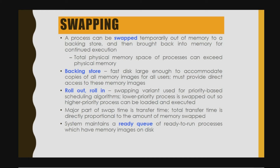Roll-out and roll-in is a swapping variant used for priority-based scheduling algorithms. A lower-priority process is swapped out so a higher-priority process can be loaded and executed. When swapping from memory to the backing store and back, there is a transfer time needed. Several periods of time are needed to transfer the whole process into the backing store and transfer it back to memory.